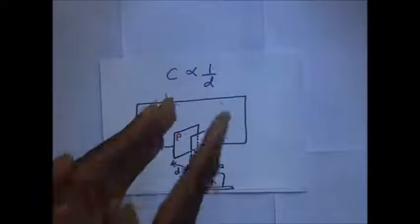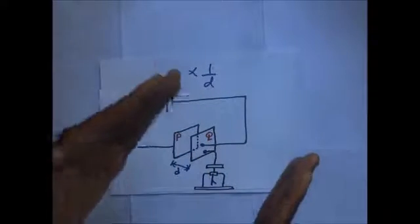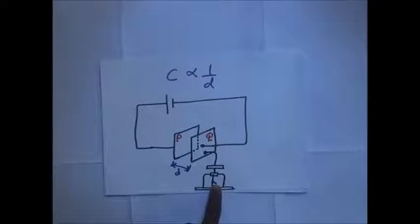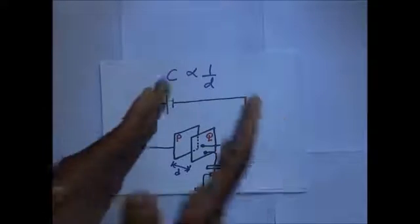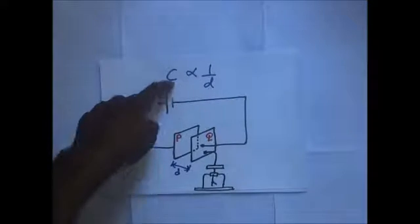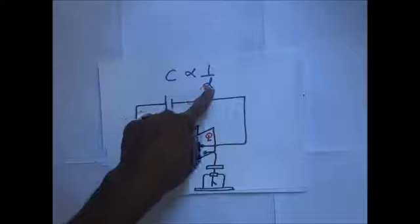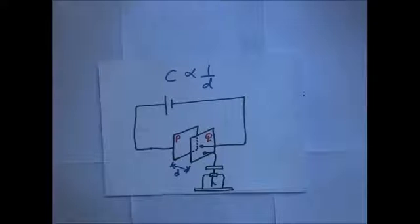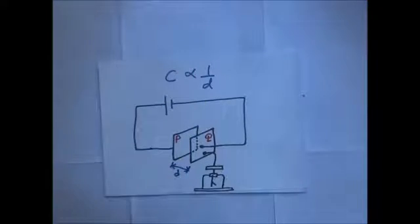Likewise, if you pull the plates apart, the divergence of the gold leaf will drop, which is a sign that when you increase the distance of separation between the plates, the capacitance of the capacitor will drop. This brings us to the conclusion that the capacitance of a parallel plate capacitor is inversely proportional to the distance between the plates.